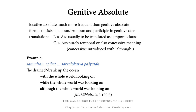In addition to the locative absolute, Sanskrit also has a genitive absolute. The locative absolute is much more frequent than the genitive absolute, but let's look at both. As far as its form is concerned, the genitive absolute consists of a noun or pronoun and a participle both standing in — yes, you may have guessed it — the genitive case.